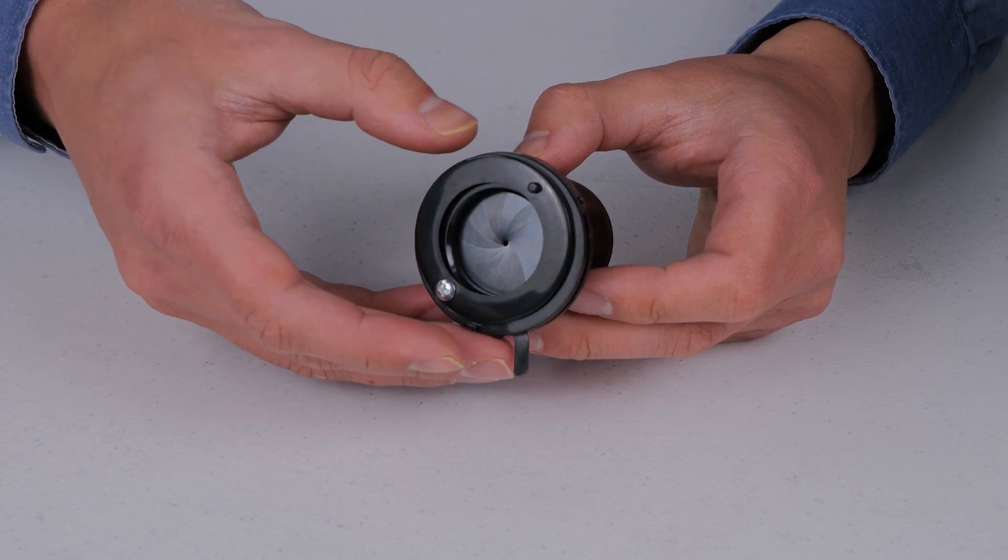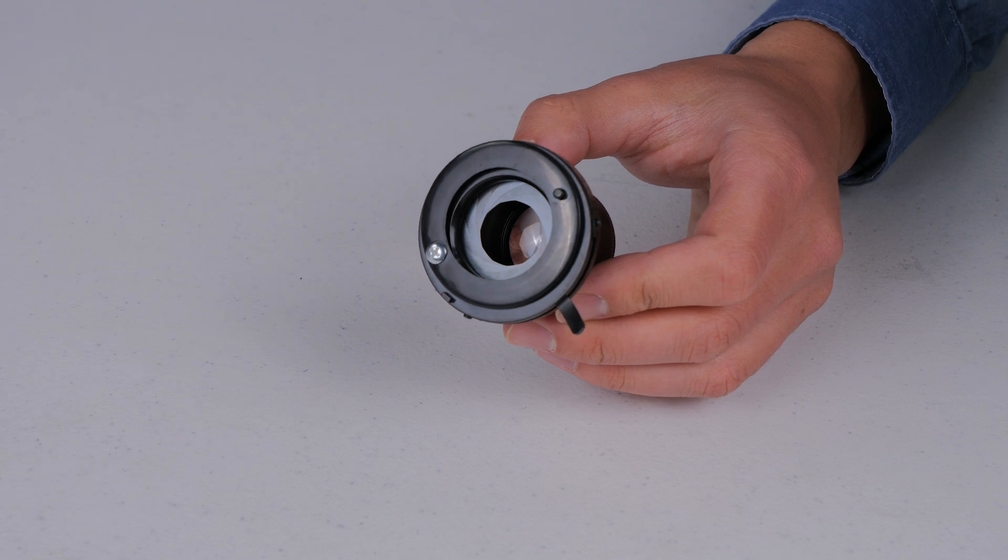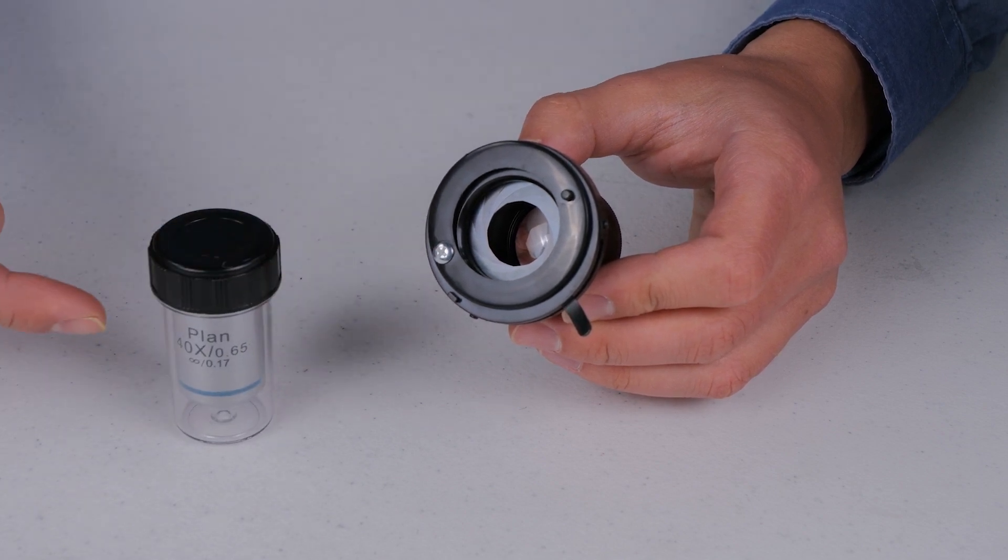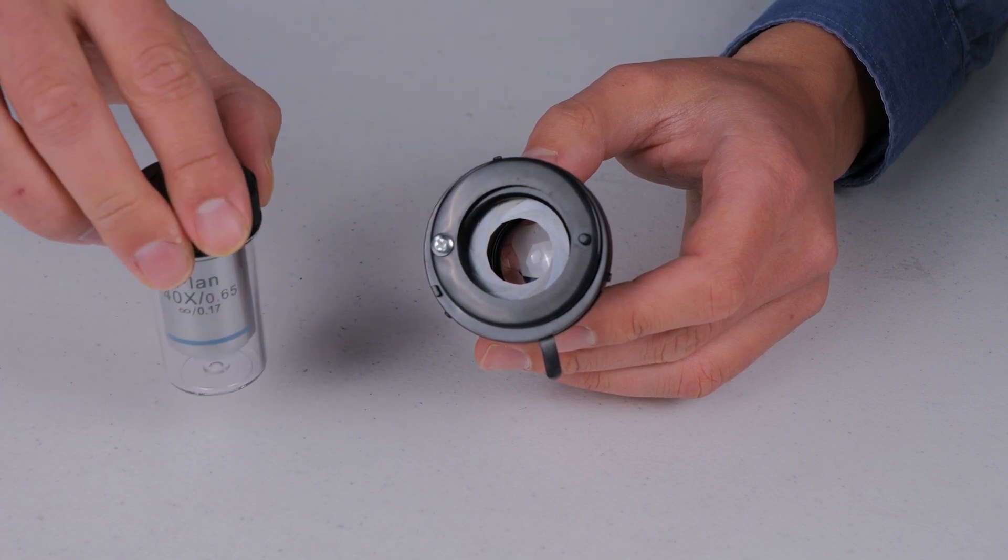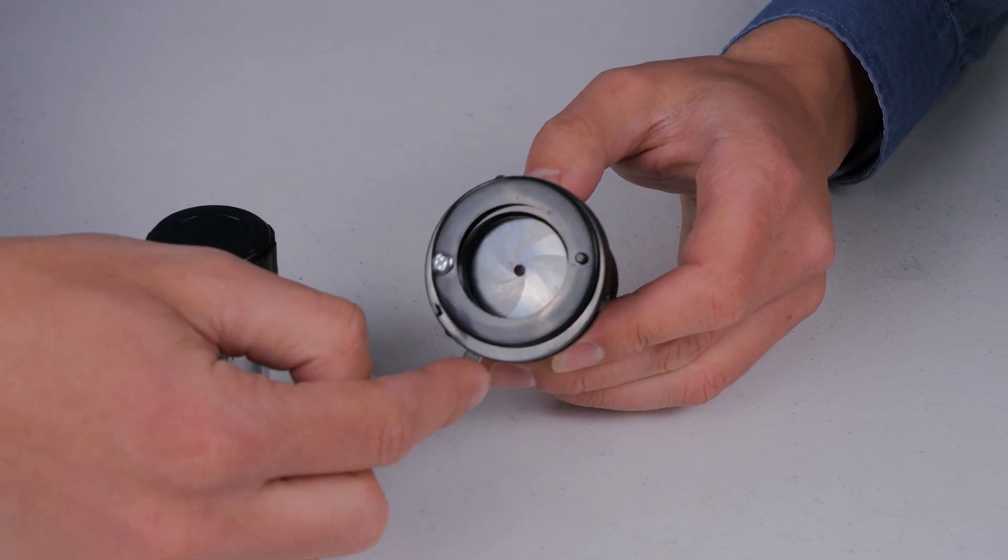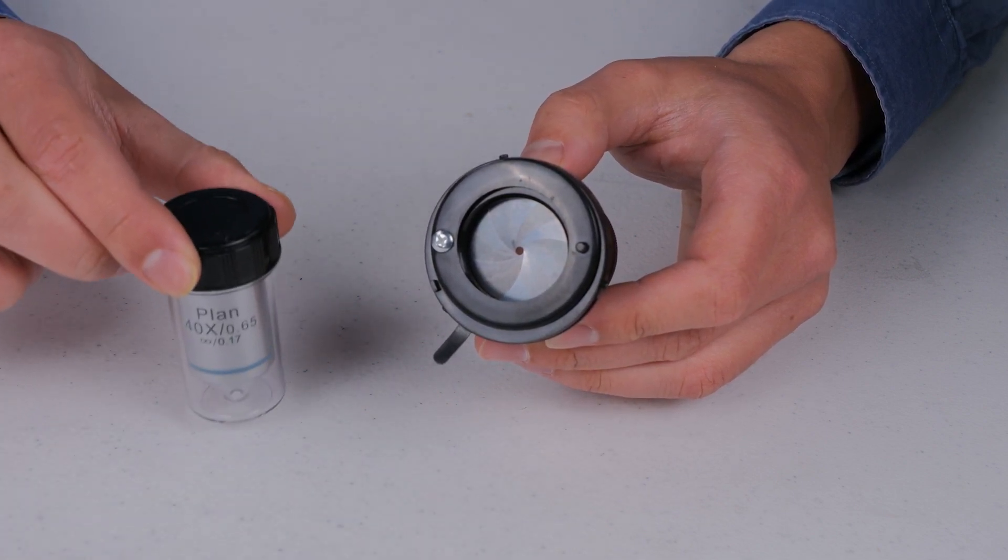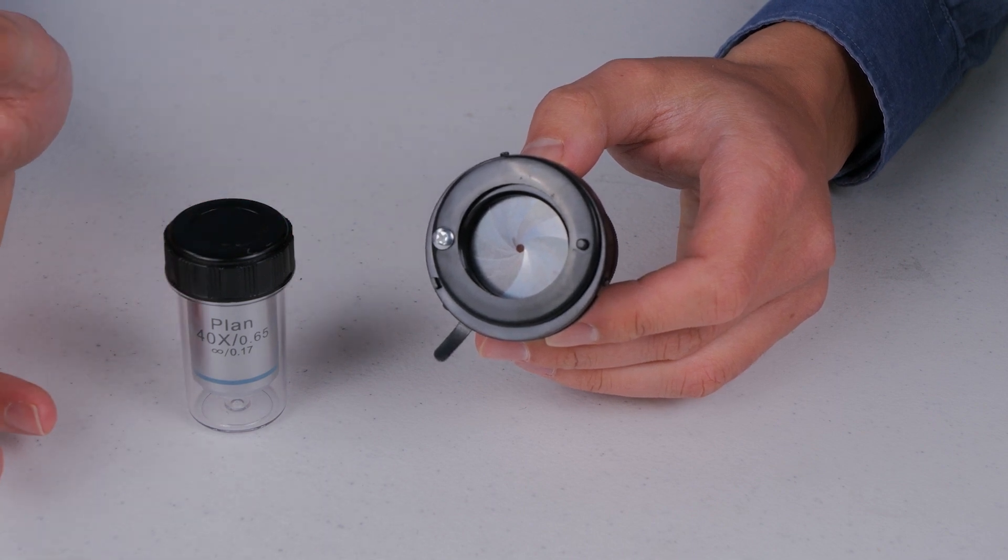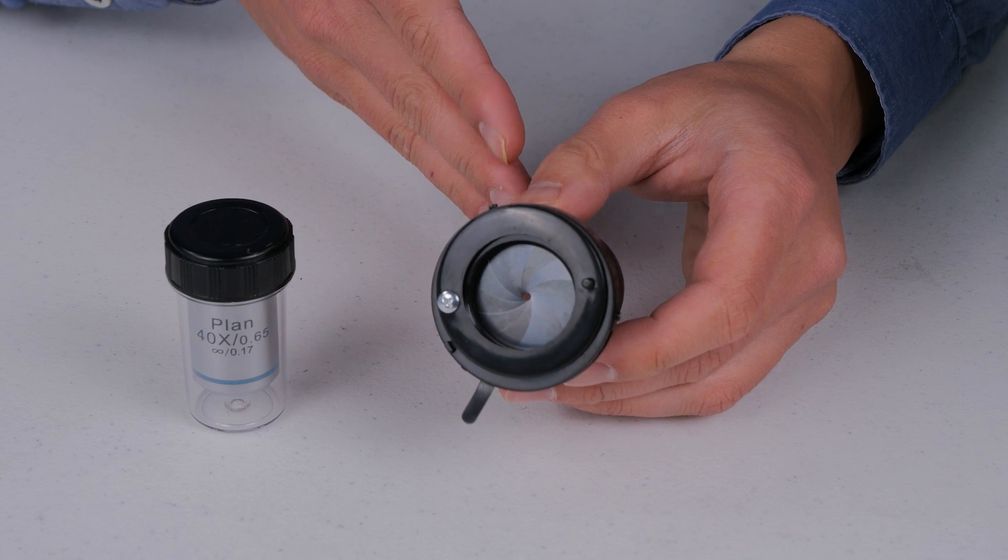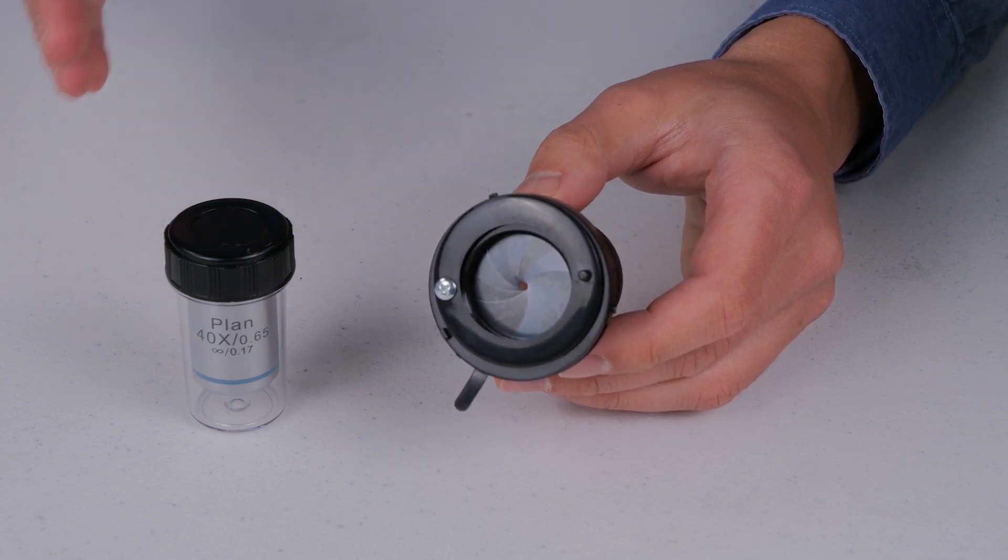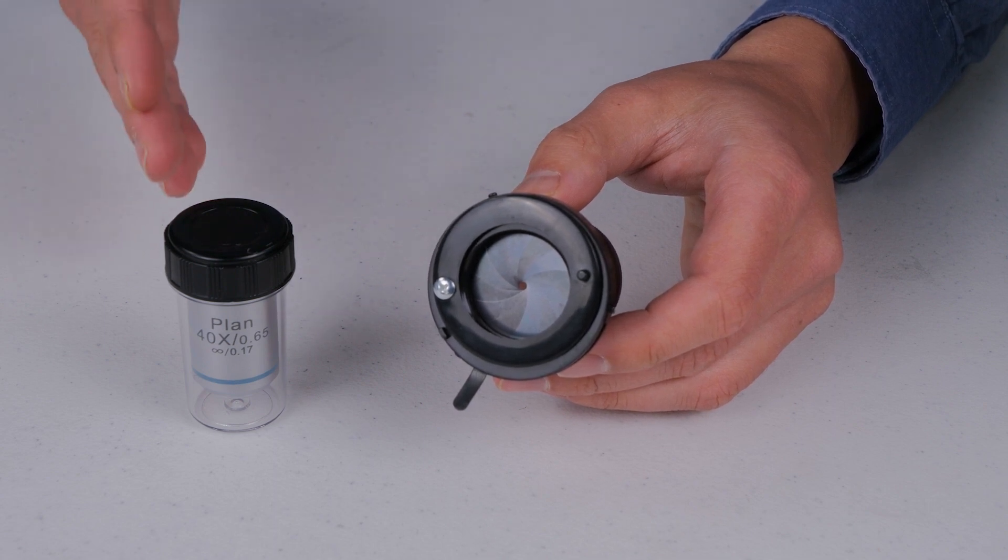And the reason why you can adjust bright field condensers is because you typically want to match the numerical aperture of the condenser to the objective. If you were to, this is a pretty relatively high numerical aperture objective, if you were to illuminate it like that, you would actually be not achieving the full resolution that this objective can get because the numerical aperture of the system is both the angle of the light that's illuminating the sample, but then also the angle of the light that's entering into the objective, which is collecting that image and then later presenting it to your eyes.